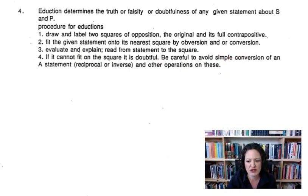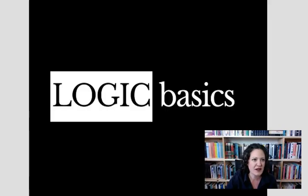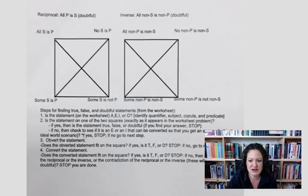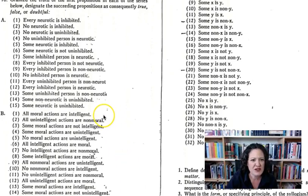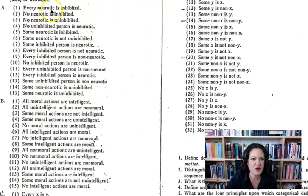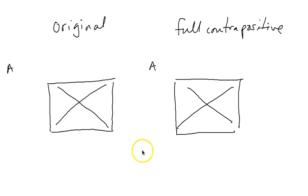I also want to draw your attention to this flow chart that I've made — that will help us. We have the two squares with the S's and P's. What we need to do is fill in the S's and P's with 'neurotic' and 'inhibited' ultimately, to make the square of opposition and its full contrapositive square to go with these statements. But before we do that, I need to show you how to make the full contrapositive square. I'm going to take myself out of the picture so I can draw this for you.